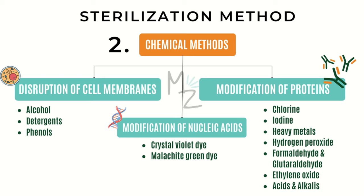Regarding modification of nucleic acids: a variety of dyes not only stain microorganisms but also inhibit their growth. Crystal violet is an antiseptic used to treat fungal infections of the skin; its action is based on binding of the positively charged dye molecule to the negatively charged phosphate groups of the nucleic acid. Malachite green, a triphenylamine dye, is a component of Löwenstein-Jensen medium used to grow Mycobacterium tuberculosis, inhibiting growth of unwanted organisms during the six-week incubation period.